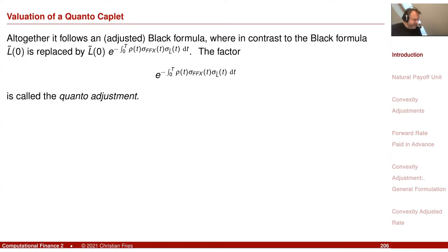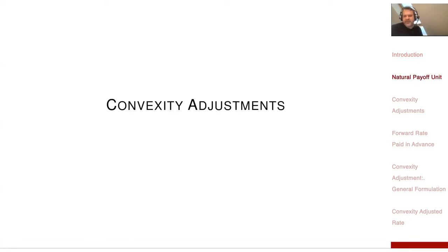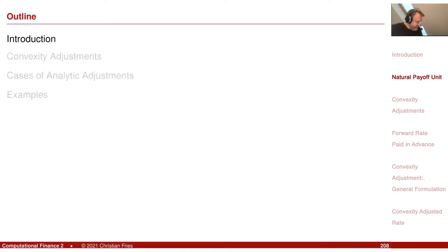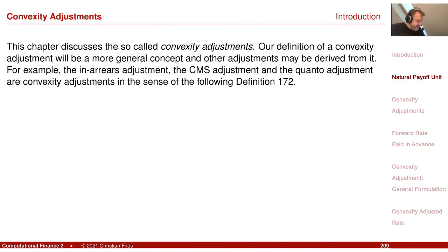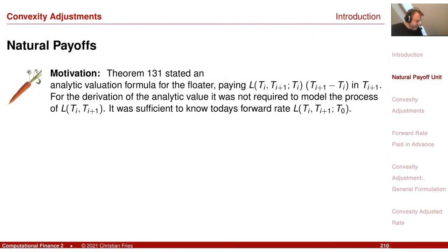Today I would like to generalize this. When we change the payoff unit, this leads to the so-called convexity adjustments. It is a very general scheme, and I will also motivate why it is called convexity. Many adjustments are of this form: the in-arrears adjustment, the so-called CMS adjustment (constant maturity swap), or the quanto adjustment we already introduced.